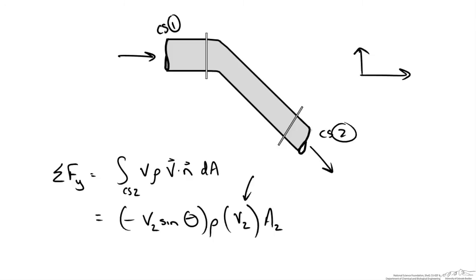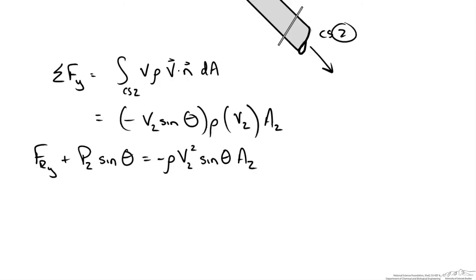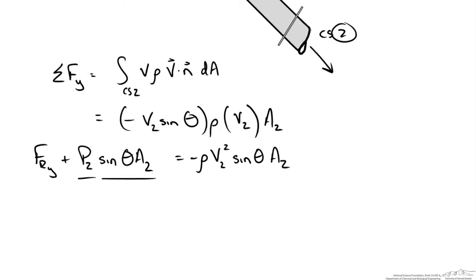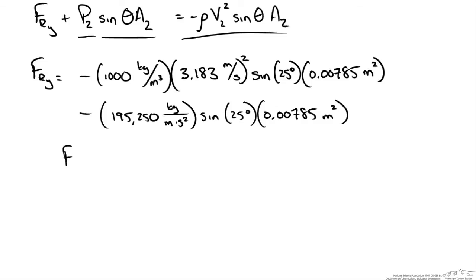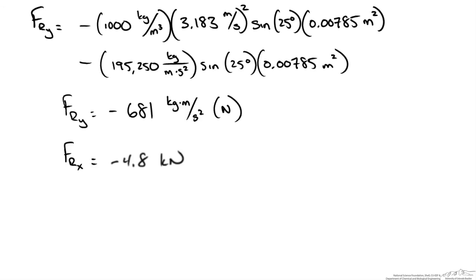The dot product with the normal should be positive. The sum of forces is the resultant force in the y direction plus p2 sine theta times area A2, equal to negative rho v2² sine theta times A2. Make sure to multiply the pressure term by the area to avoid the same mistake twice. With p2, A2, sine theta, and all right-hand-side quantities known, we solve and get a resultant force in the y direction of negative 681 N. In the x direction we confirmed negative 4.8 kN.